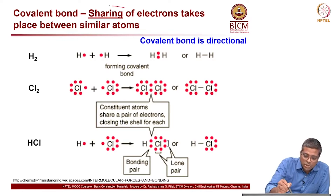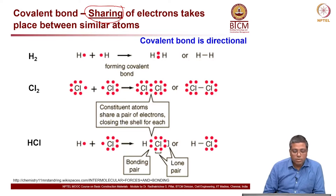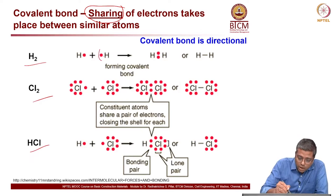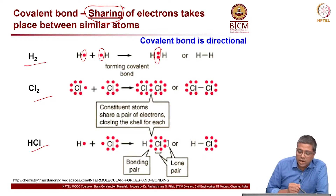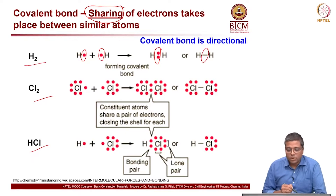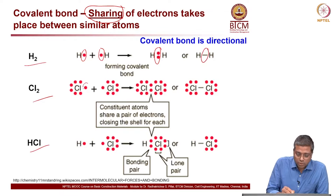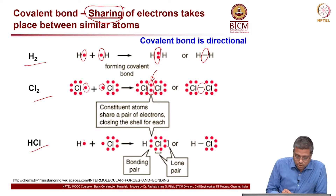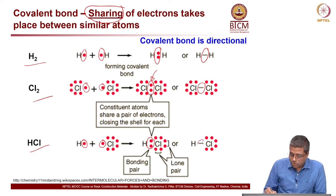Covalent bonds — here it is not transfer but sharing of electrons. Examples are hydrogen, chlorine (Cl2), and HCl or hydrochloric acid. For hydrogen, the 1 electron from each atom is shared, giving the 1s2 electron configuration, also indicated by a hyphen. In the case of Cl2, the 1 electron from each is being shared. In HCl also, you have this full sharing happening, also indicated by a hyphen.